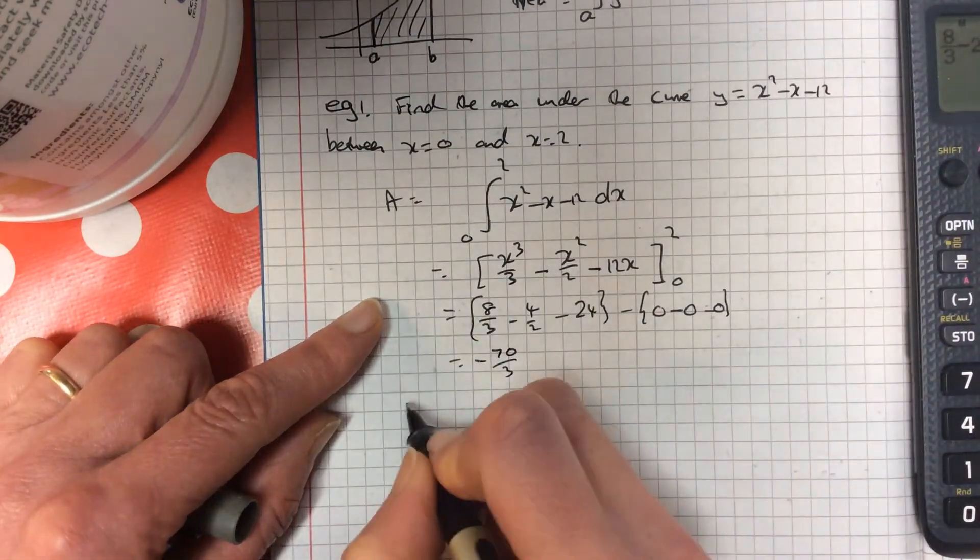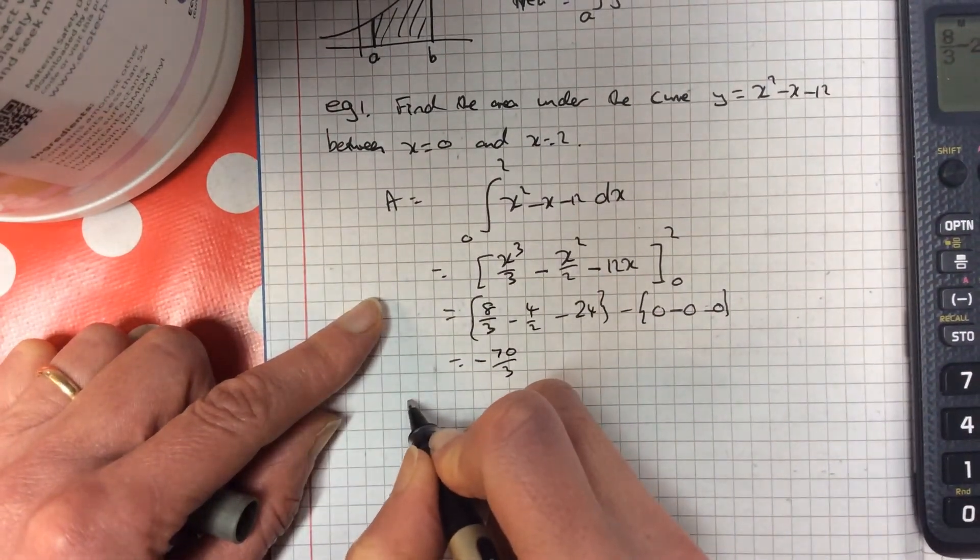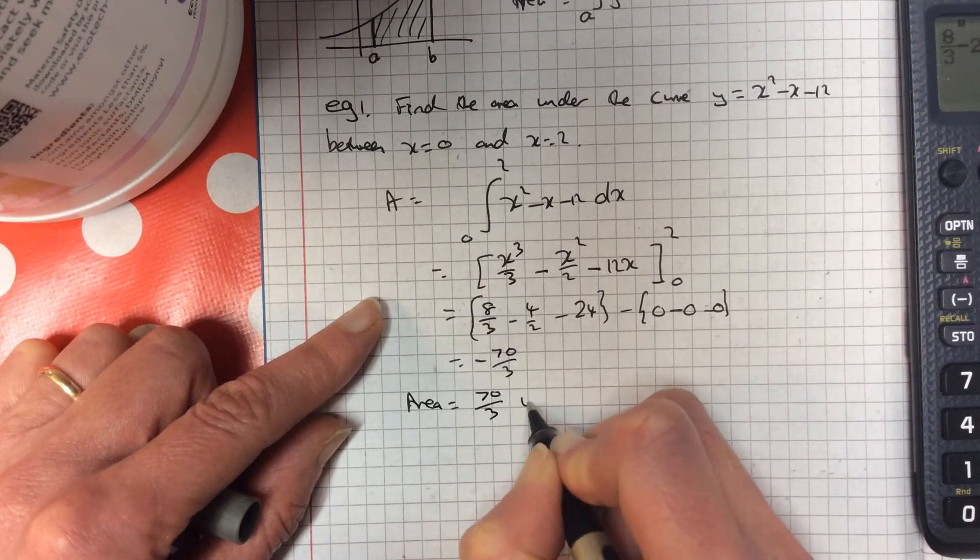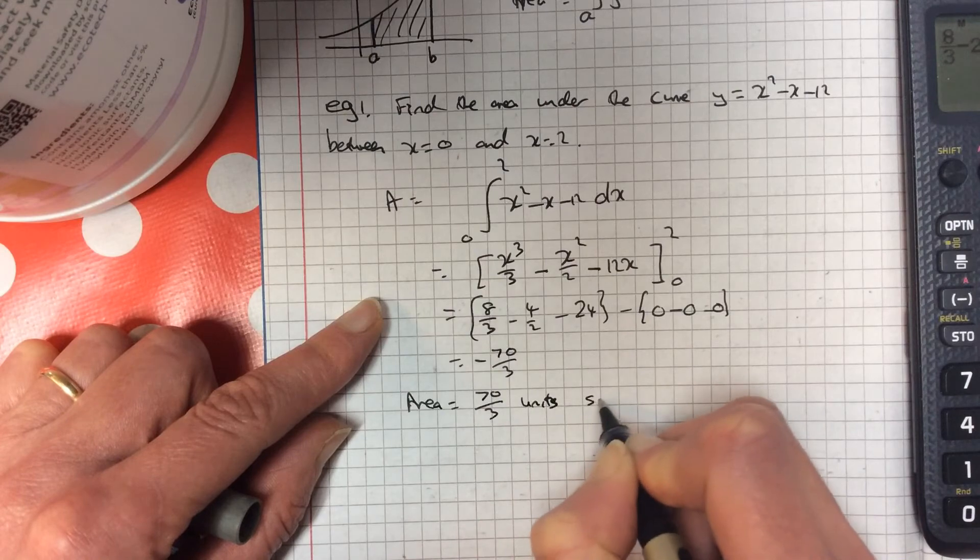Now, because this is an area, you always give it as a positive answer. So you write the area is 70 over 3 units squared.